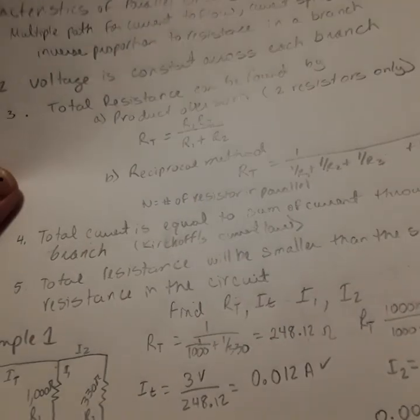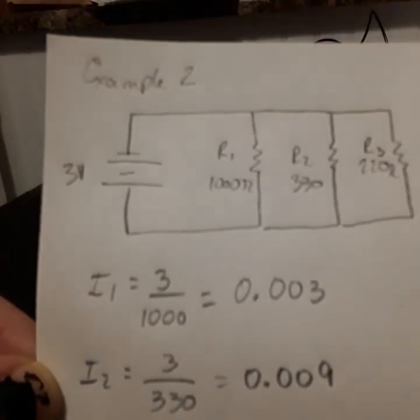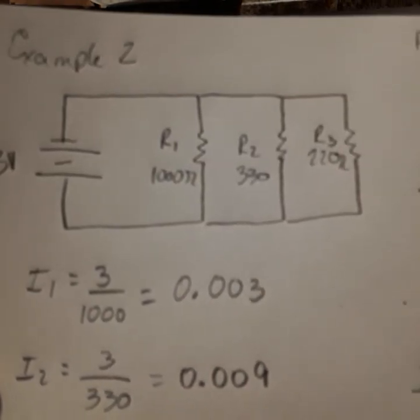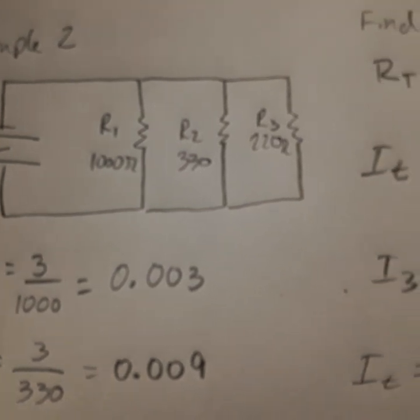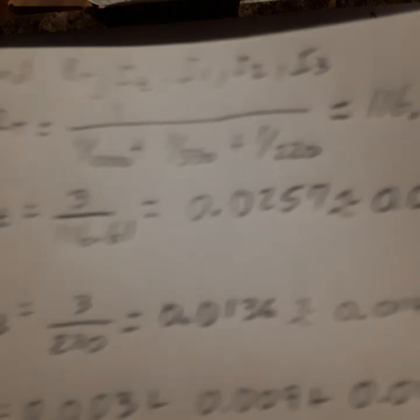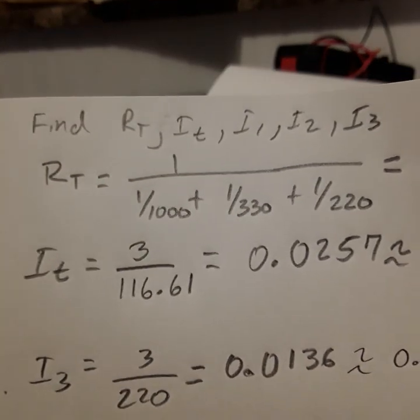Now let's look at another example with three resistors. Again, same concept: 3 volts, with resistors of 1000 ohms, 330 ohms, and 220 ohms. In this case, we can't use the product over sum, so we use the reciprocal method.